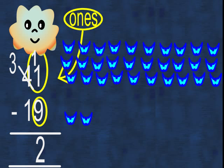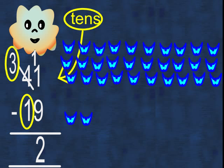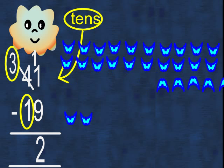Now we have two birds left in the ones column. In the tens column, we have three lots of 10 take away one lot of 10, leaving two tens. Our final answer is 22.